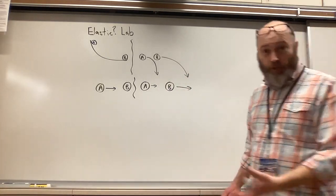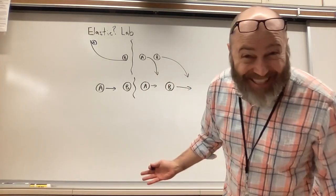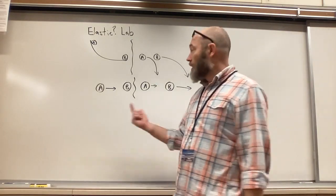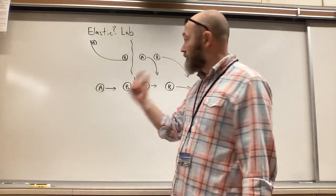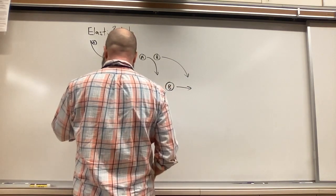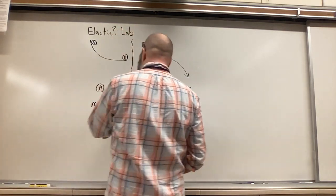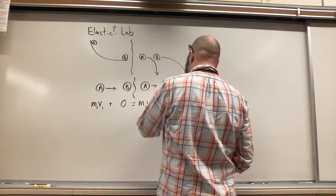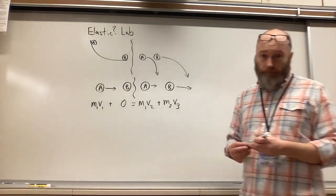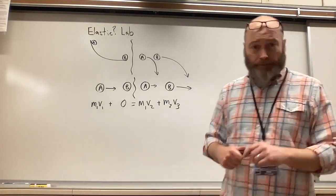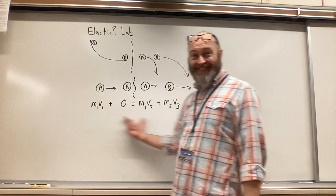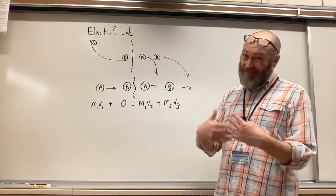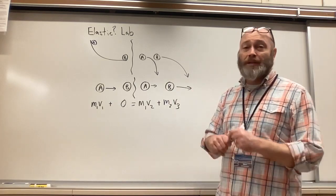So I drew my picture — what's my next step? That's right, we're going to write an equation. When we write our equation, we get m1*v1 on the left side, and on the right side m1*v2 plus m2*v3. When we're doing a lab and trying to prove whether momentum is conserved, you put a big question mark here.